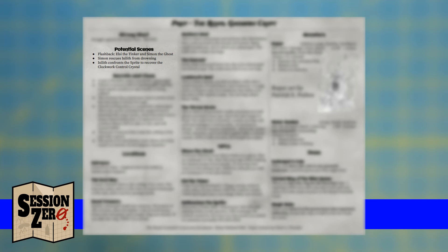Next, outline your potential scenes — not deciding what will happen, only scenes that might happen based on everything that's come before. One scene I'd like to see is a flashback with Elsie the Tinker and Simon the Ghost. I skipped ahead narratively when I met Simon because I wanted to get to the cave. This scene can clue Isoleth into some of the things going on in the crypt. Another possible scene is if Isoleth goes down into the submerged part of the cave and drowns — I'll have Simon the Ghost follow him down and rescue him. In the solo play session, Simon said he couldn't re-enter the crypt, but I can say he saw Isoleth enter and figured out how to do it himself.